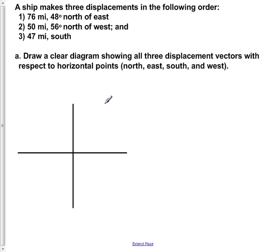A ship makes three displacements in the following order. One: 76 miles, 48 degrees north of east. Two: 50 miles, 56 degrees north of west. And three: 47 miles south.